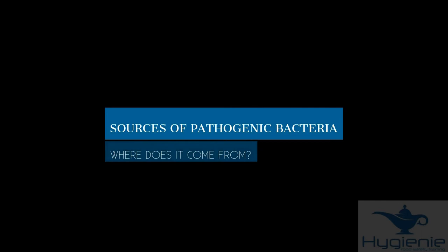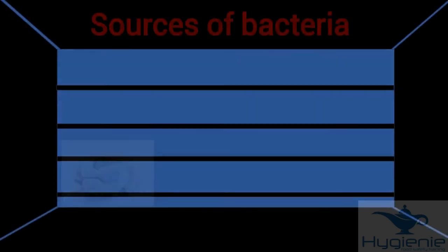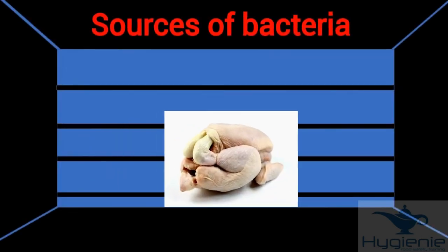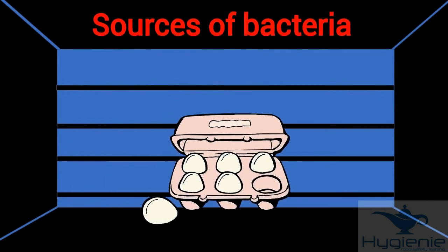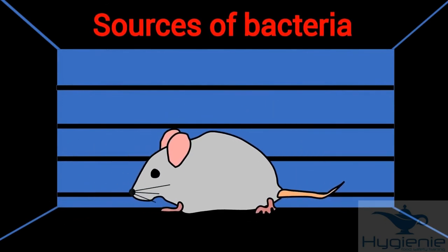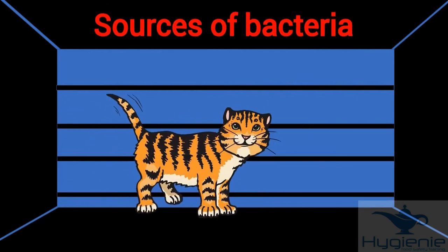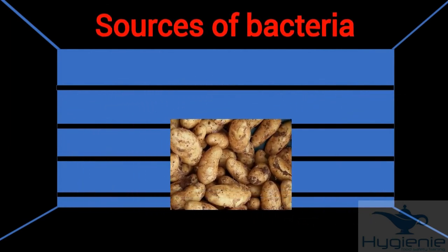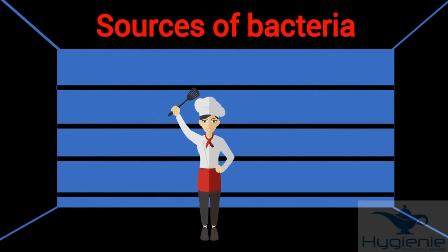So where do pathogenic bacteria come from? The main examples are raw meat and poultry, eggs, pests, pets, soil and dirt and people.